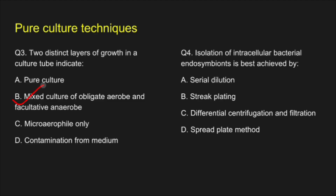Question 4. Isolation of intracellular bacterial endosymbionts is achieved by — A. Serial dilution, B. Streak plating, C. Differential centrifugation and filtration, D. Spread plate method. The correct answer is option C: Differential centrifugation and filtration.